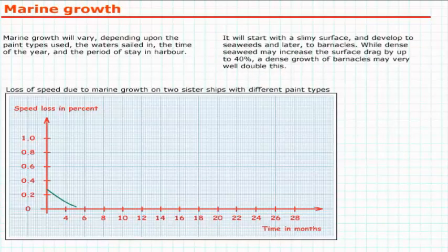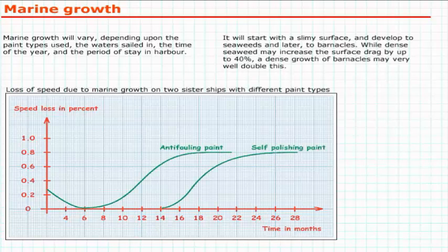Marine growth will vary, depending upon the paint types used, the waters sailed in, the time of the year, and the period of stay in harbour. It will start with a slimy surface and develop to seaweeds and later to barnacles.